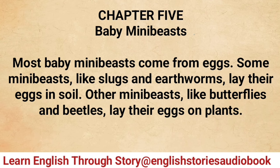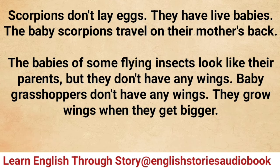Chapter five: Baby mini beasts. Most baby mini beasts come from eggs. Some mini beasts like slugs and earthworms lay their eggs in soil. Other mini beasts like butterflies and beetles lay their eggs on plants. Scorpions don't lay eggs — they have live babies.